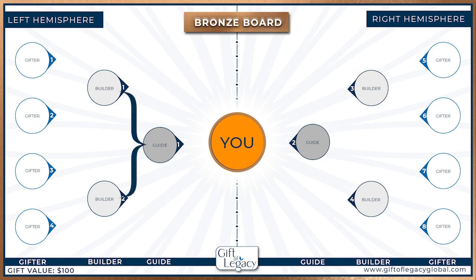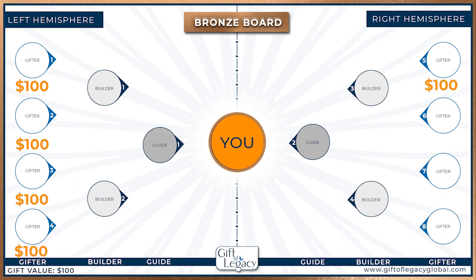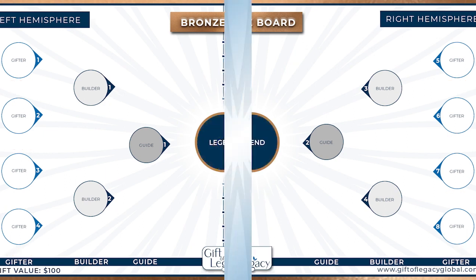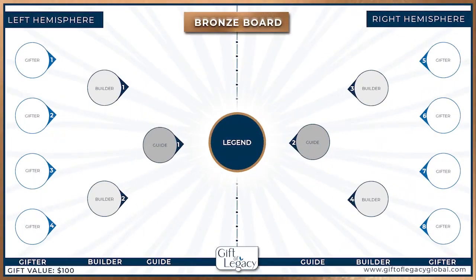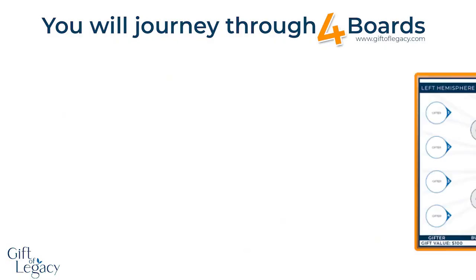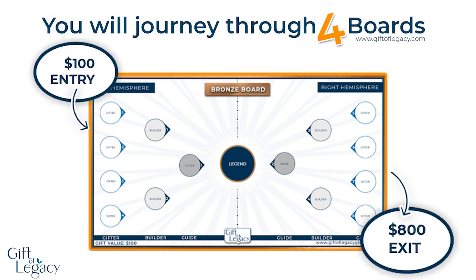Your Builders are now in the Guide position and their Gifters are now Builders. They will invite two new Gifters each to the board, sending you $100 each — or $800 in total — so that the board can complete and split the two hemispheres to again start two new boards. You have gifted $100 and received $800 at this point — not a bad start. This means you have completed your first cycle.